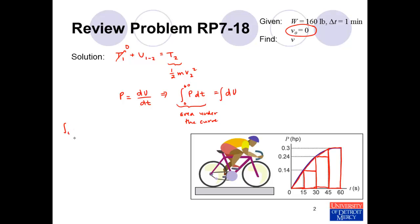Rewriting this over here, the work done between the two time instances, between 0 and 60 seconds, is equal to the kinetic energy, one-half mv squared, where the mass is the weight divided by the acceleration due to gravity and the velocity is what we're trying to determine.